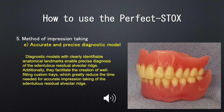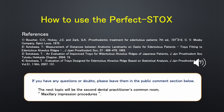E. Accurate and Precise Diagnostic Model: Diagnostic models with clearly identifiable anatomical landmarks enable precise diagnosis of the edentulous residual alveolar ridge. They facilitate the creation of well-fitting custom trays, which greatly reduce the time needed for accurate impression taking. This concludes 'How to use the Perfect STOX.' If you have any questions or doubts, please leave them in the comment section. The next topic will be: Maxillary Impression Procedures.